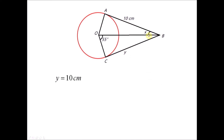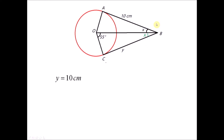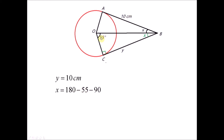Next, we want to find X. We know that because of the equal angle property, this angle is also X. Looking at triangle OBC, it is a right-angled triangle because CB is a tangent, making the angle at B equal to 90 degrees. For this triangle, we know one angle is 55 degrees and another is 90 degrees, so X equals 180 minus 55 minus 90, giving X equals 35 degrees.